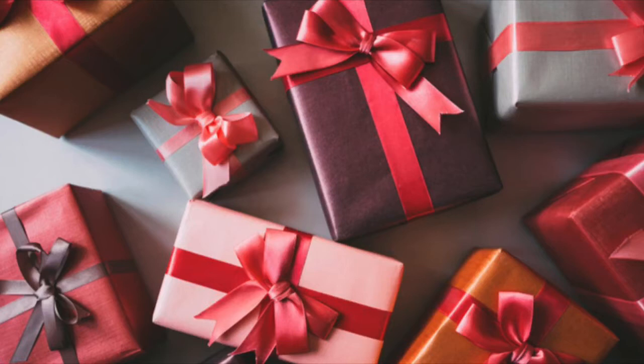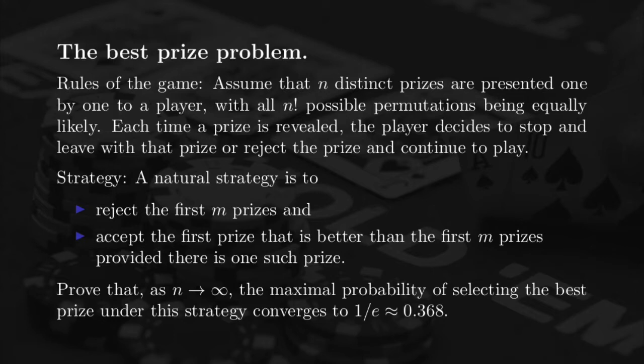The goal of the problem is to compute the probability of finding the best price. First, we are going to use conditional probabilities to compute the probability of finding the best price as a function of N and M. Then it turns out we can compute explicitly the maximal probability of selecting the best price, and prove that when N goes to infinity, asymptotically, the probability of finding the best price is one over e, which is a pretty good probability — larger than one third.